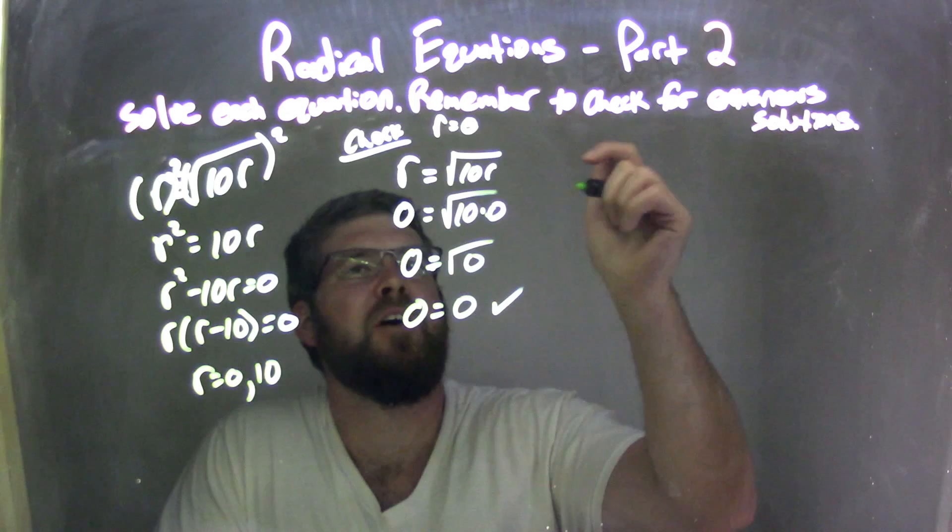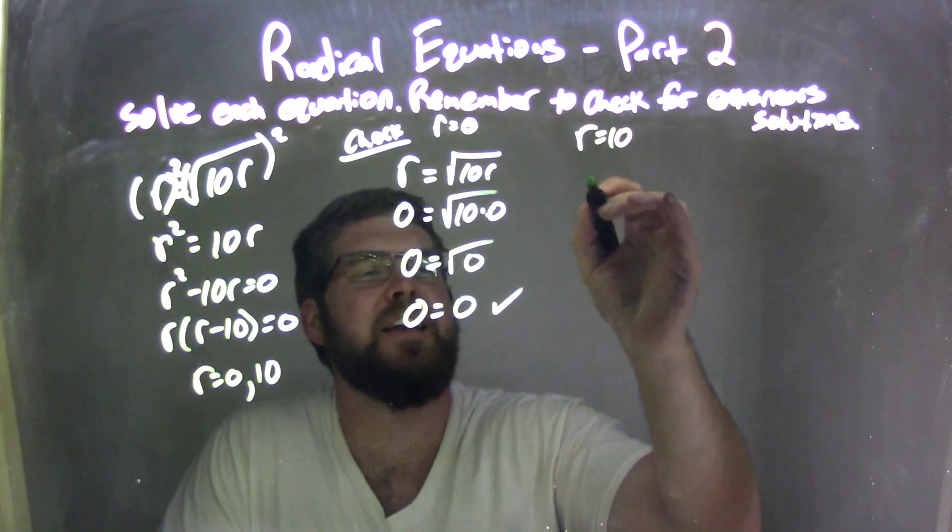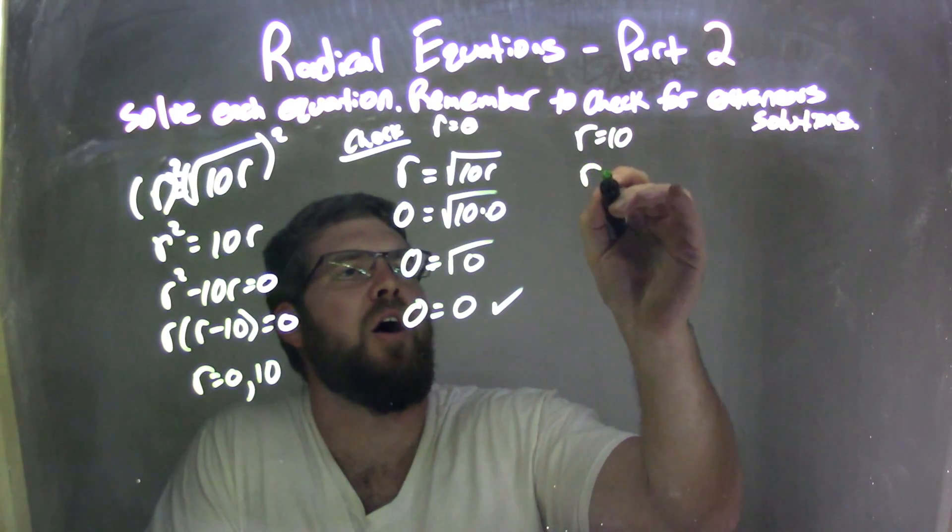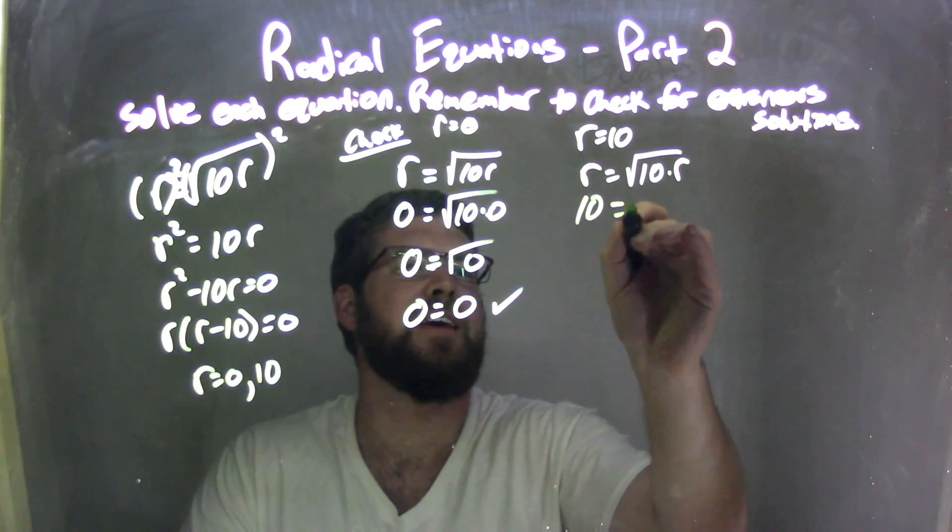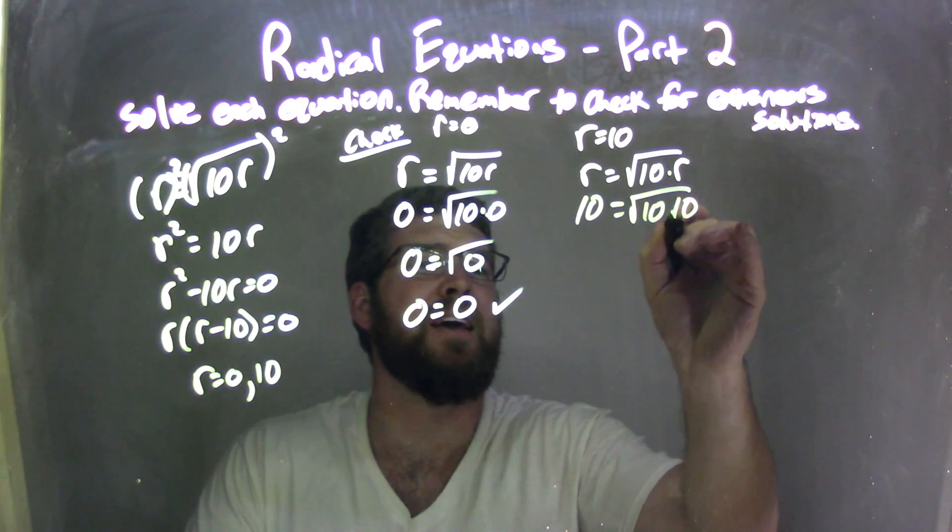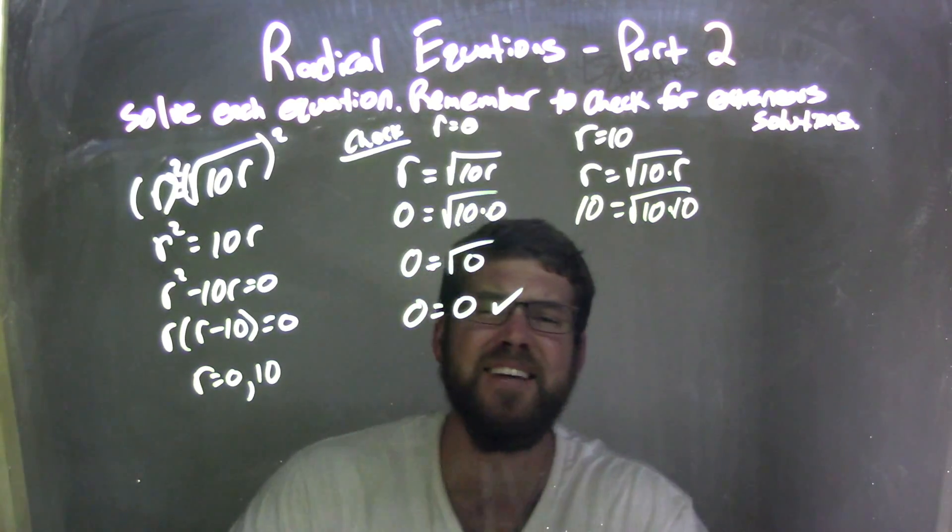Let's not skip on our work here. So we have r equals 10. Don't be lazy. r equals square root of 10 times r. Let's plug 10 in. 10 equals square root of 10 times 10. 10 times 10 is 100.